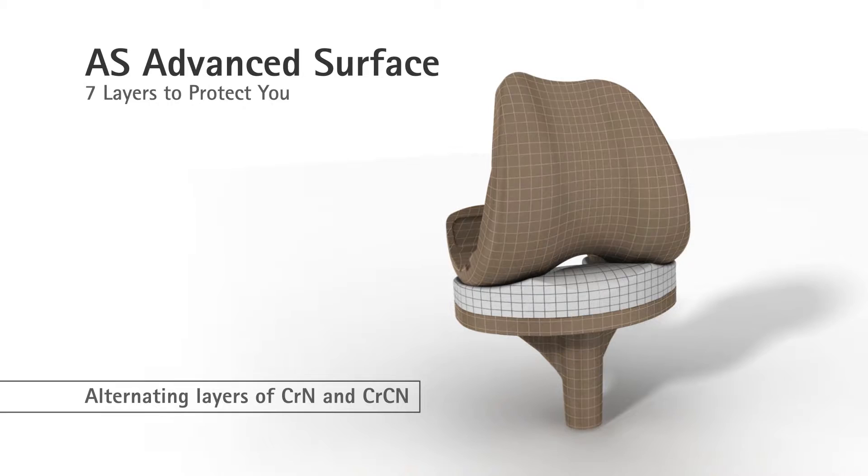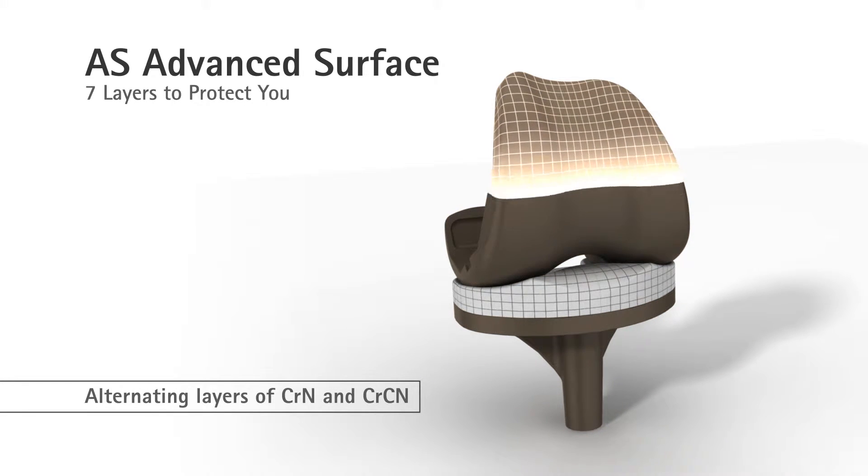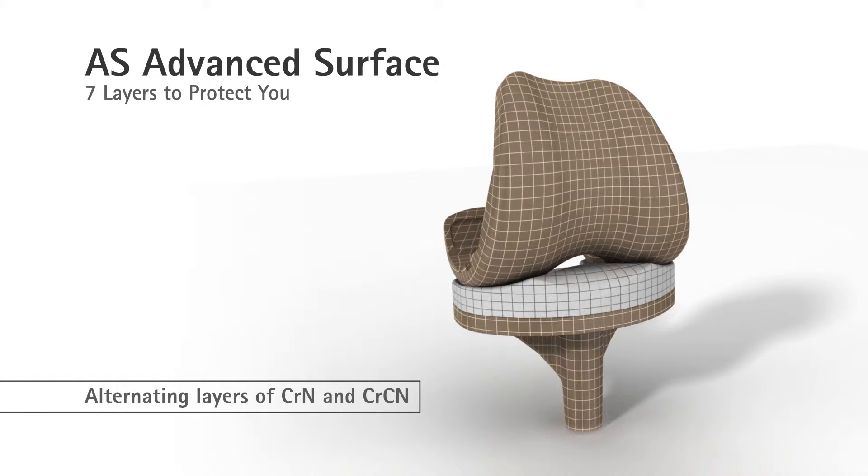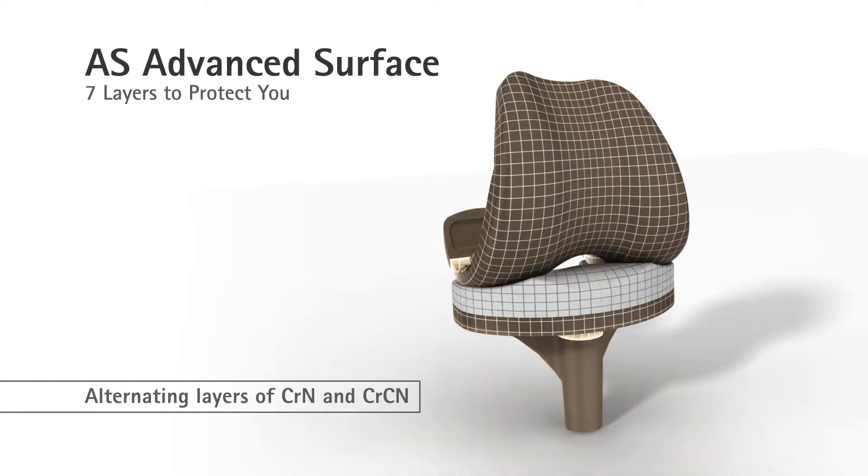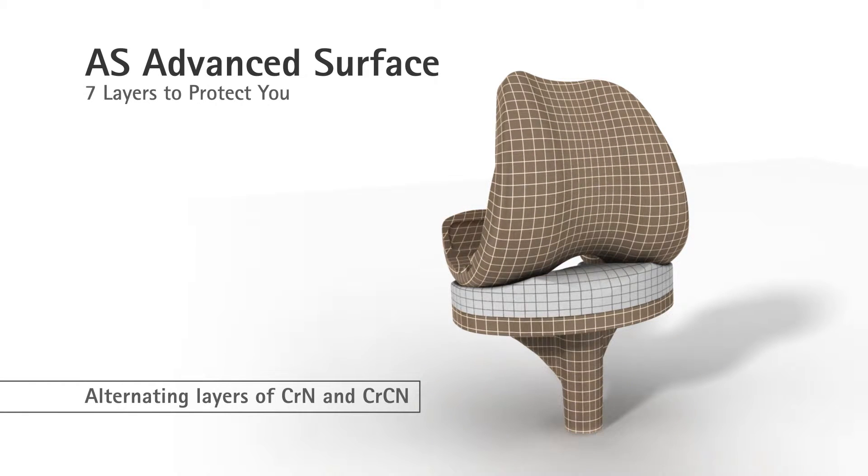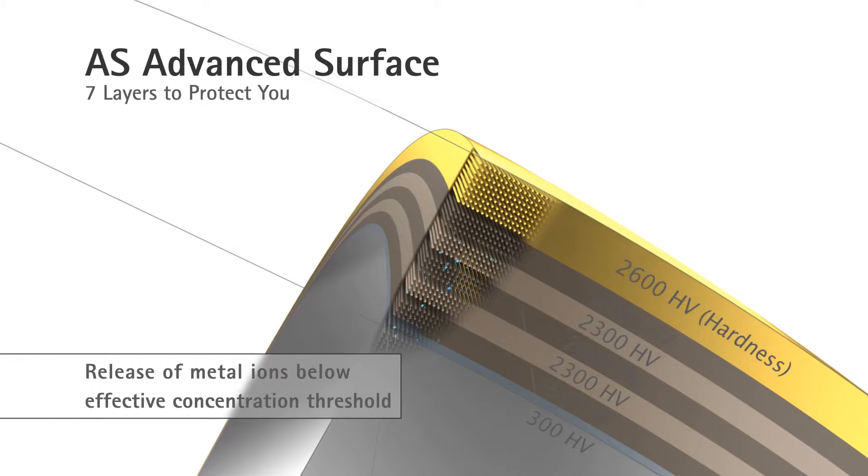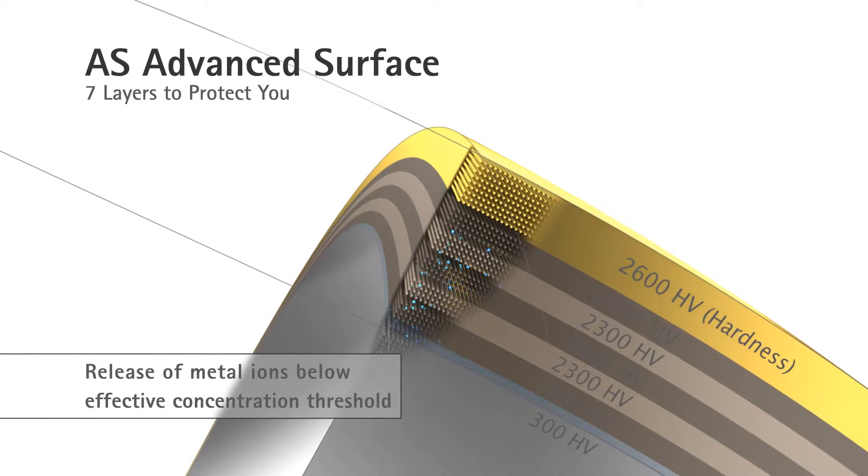The five transition layers provide a reliable barrier that prevents the release of metal ions, effectively reducing the allergenic potential of the implant. In laboratory tests, the concentration of metal ions in the advanced surface coating was found to be below the effective concentration threshold.